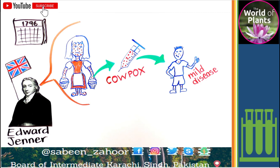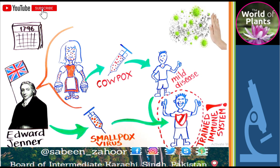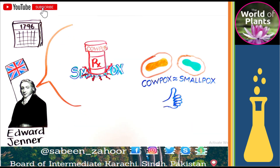Dr. Edward Jenner injected cowpox germs into the body of a little boy by taking cowpox sores and injecting them into the boy. The little boy became infected from cowpox and had a mild illness — not at all as dangerous as smallpox — and he recovered quickly. When Dr. Jenner later exposed the boy to smallpox viruses, the boy did not get sick; his immune system had been trained to fight against the smallpox virus infection.